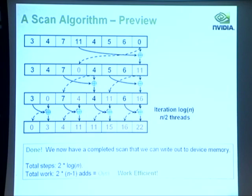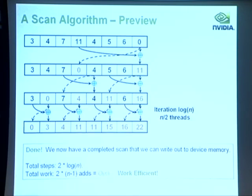The total number of steps is 2 * log n, and total work is 2*(n-1) adds, which is O(n) — so this is work efficient. But it's not enough to be work efficient; you also want to be cost efficient, meaning the number of threads times the number of operations. This algorithm is not cost efficient, but there's a way to make it cost efficient for better practical performance — I'll discuss this more tomorrow.